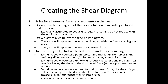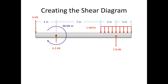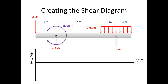Let's do this in practice. We've got a beam with a point force, a moment, two supports, and a distributed force. Step one is always to figure out the reaction forces at the two supports — sum of forces in x, sum of forces in y — using the equivalent point load for the statics problem. Once I've solved for all external forces and drawn the free body diagram, I put a set of axes below it with force on the y-axis and location on the x-axis, lined up below my diagram.